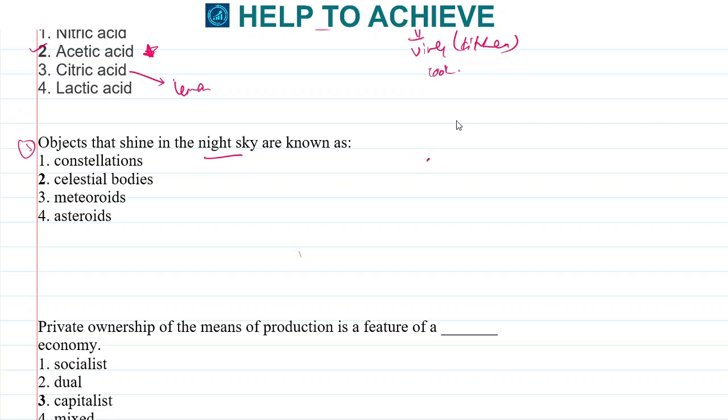Objects that shine in the night sky are known as what? In the night we see some objects along with the stars which will be shining. These bodies are known as celestial bodies or celestial objects, like moon, sun, and planets like Venus and Mercury.